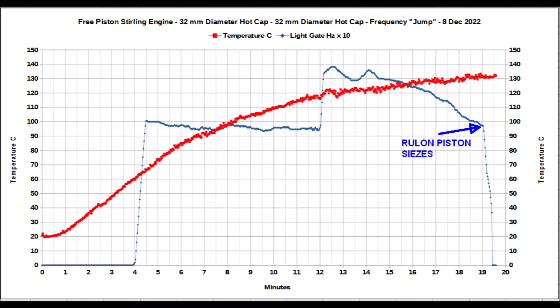The red line on this graph shows the temperature of the hot cap. The scale is on the left-hand side in Centigrade. Along the bottom is the time, and you can see that at minute four when the temperature got up to about 65 Centigrade, the blue line shows that the engine has started oscillating and started quite sharply and rose up to about 10 Hertz on the right-hand scale.